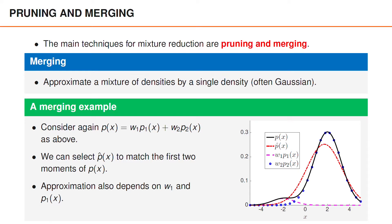A consequence of this is that the approximation depends on both components in p of x. We have illustrated this in the figure where you can see that p hat now has a larger variance than before and it's also shifted slightly towards the area where p1 of x has its support. The approximation p hat of x still underestimates the true density around x equal minus 2, but not to the same extent as when we used pruning.